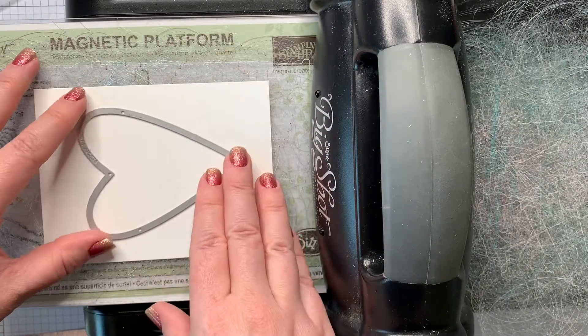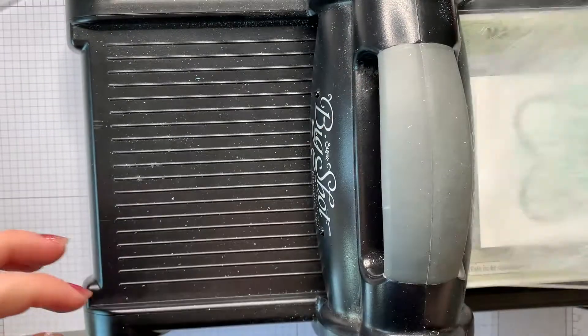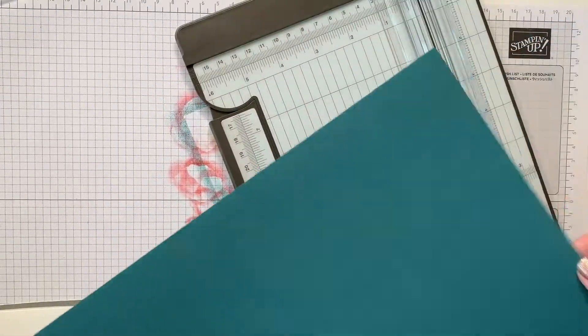Now I'm taking a card mat with one of the larger hearts and I am cutting it right out of the middle and I'm using both of those pieces on the two cards I'm making today.